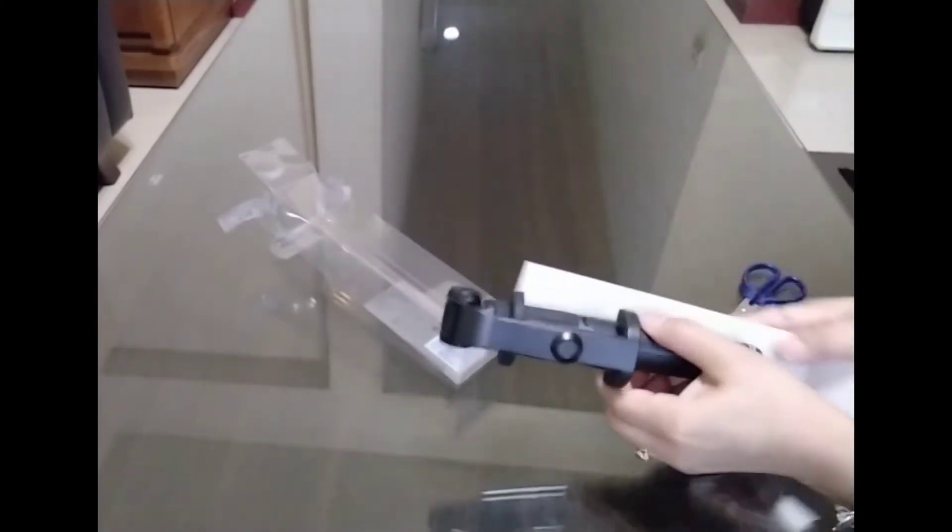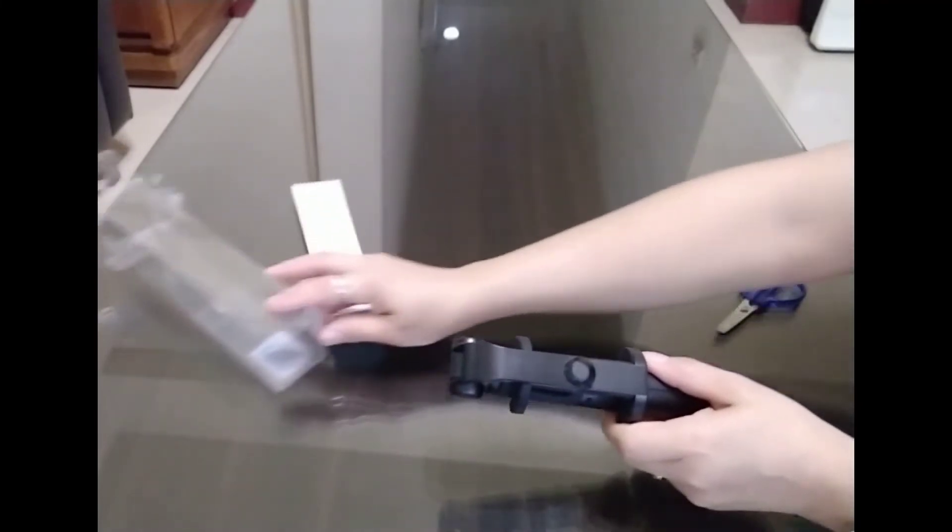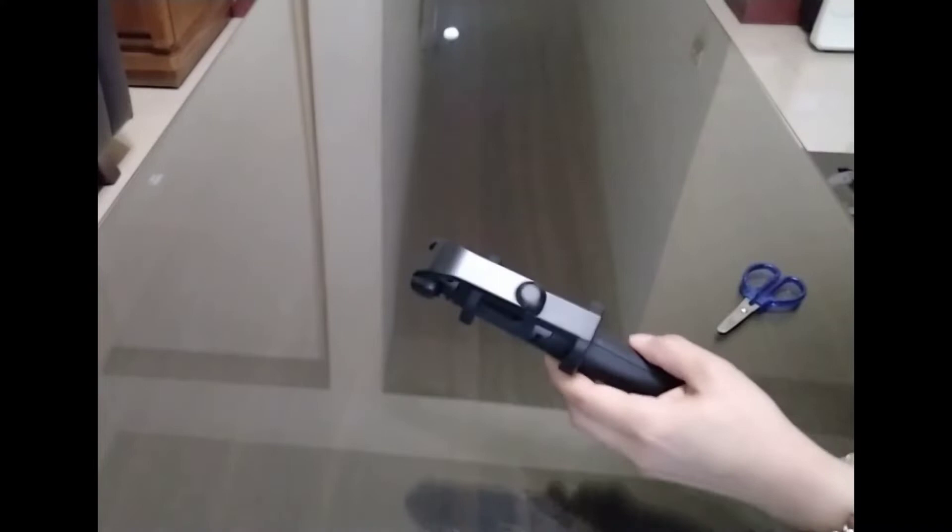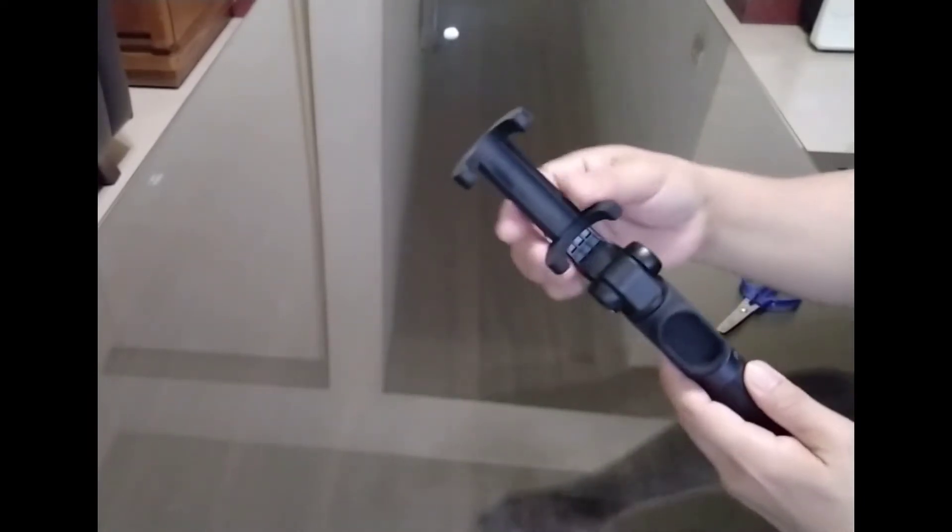And now let's take a look at this mi selfie stick. Okay guys, it is how it looks like. The quality is really cool. It's made of plastic and aluminum alloy rod. It also has parts that are rubberized.